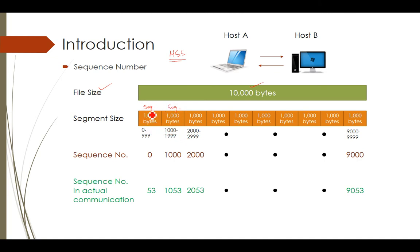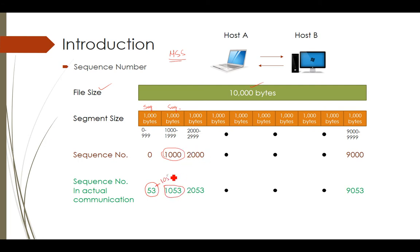After dividing into segments, we assign sequence numbers. The sequence number may not start at 0 — it can be any random number. For example, if the sequence number chosen is 53, and we transfer 1000 bytes, the next sequence number will be 1053. Then 1053 to 2052 is the next segment, and so on. These are the sequence numbers assigned to each segment.